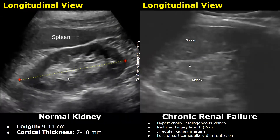This image shows chronic renal failure in the left kidney. It appears very small and heterogeneous, with hyperechoic areas. The hyperechoic appearance is due to the formation of scar tissue in the kidney.